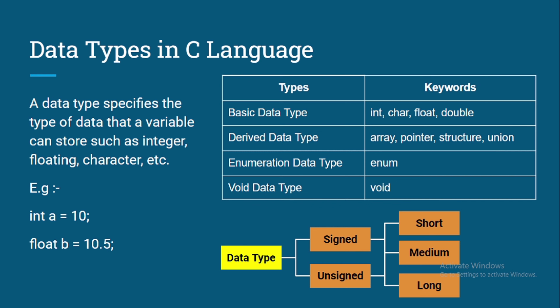In the next chart we have data types with signed, unsigned, short, medium, and long categories. In a data type, two things are very important: memory size and memory range. We need to manage memory in C and ensure that the value we are storing into a variable is within the range that the data type can hold. For example, if we store 1000 into 'int a', we need to check whether that is within the int range.